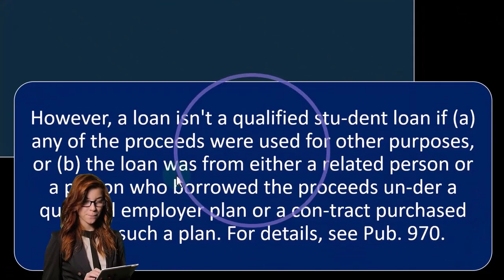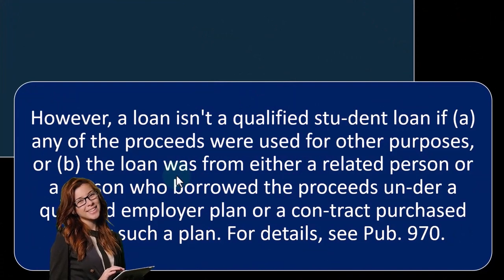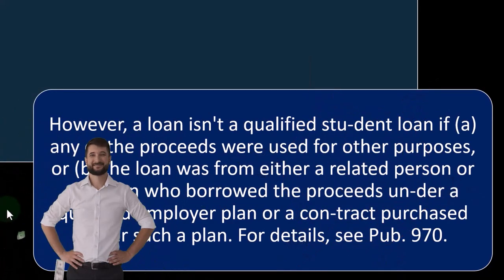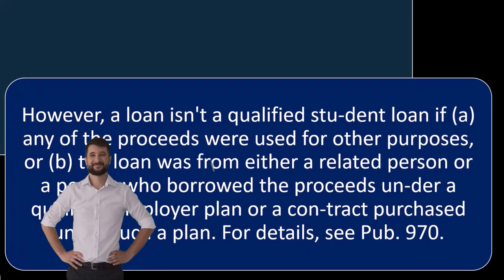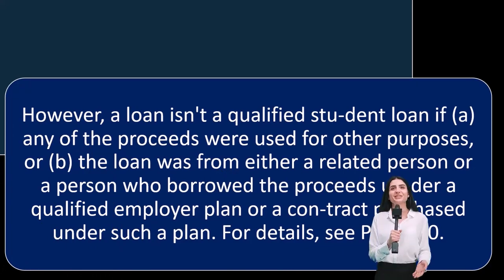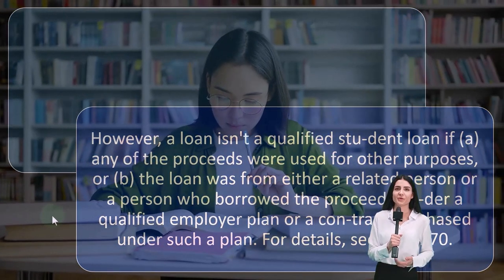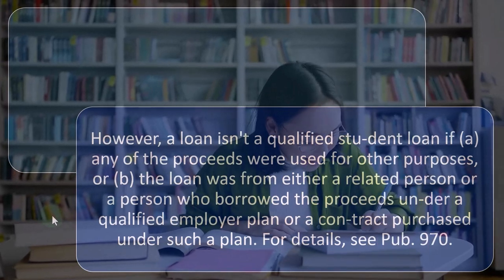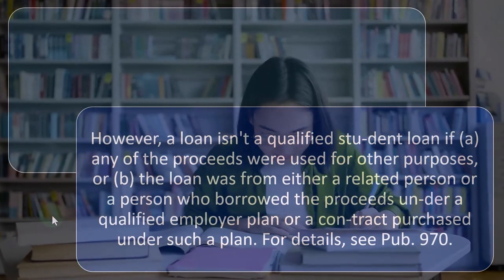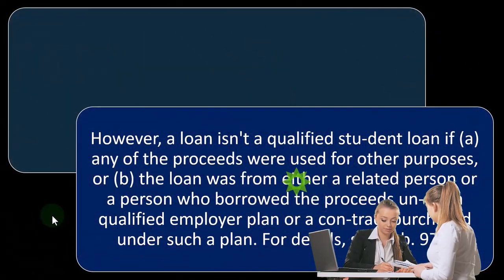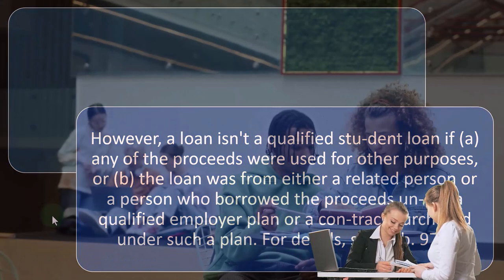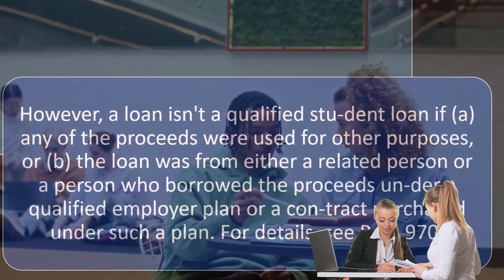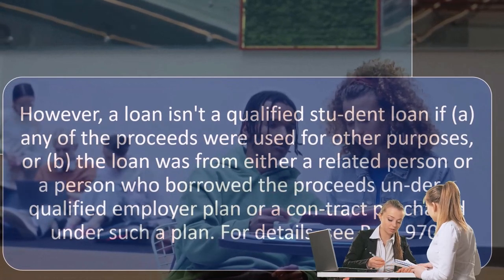However, a loan isn't a qualified student loan if (A) any of the proceeds were used for other purposes, or (B) the loan was from either a related person or a person who borrowed the proceeds under a qualified employer plan. See Publication 970 for detail. This is mostly the case for many people in college — they actually didn't spend the money on education; they spent it on other things. If there's an incentive where student loan money might be wiped out going forward, that will probably lead to people trying to scam student loan money and spend it not on student loans. So we have to be careful on the incentive structures.